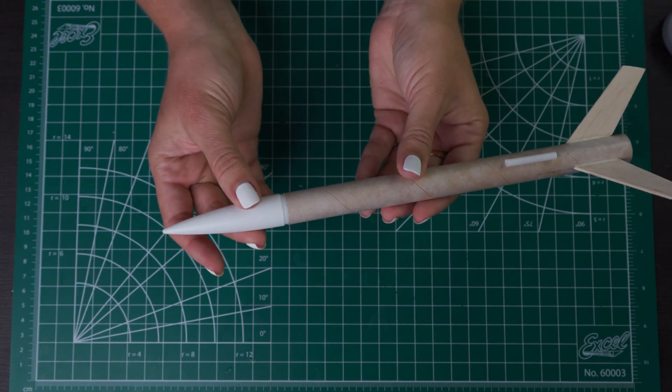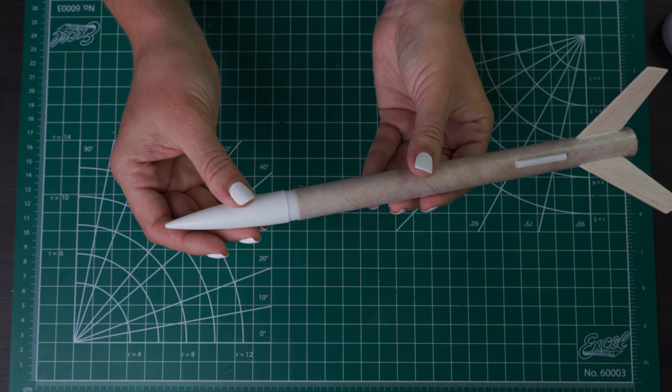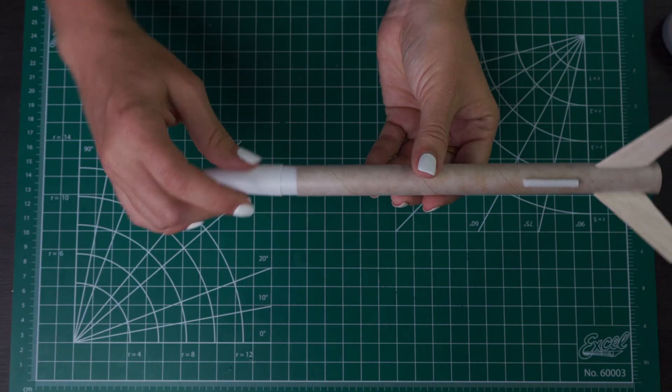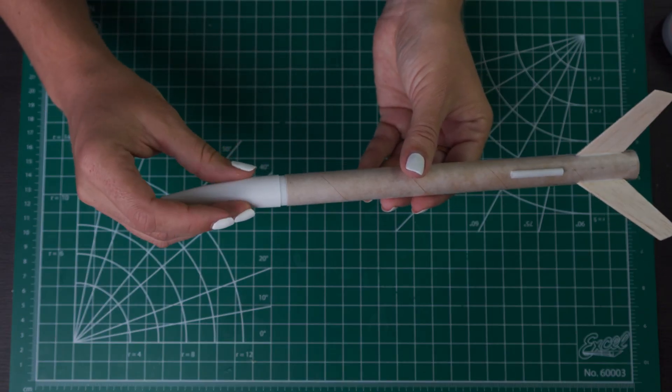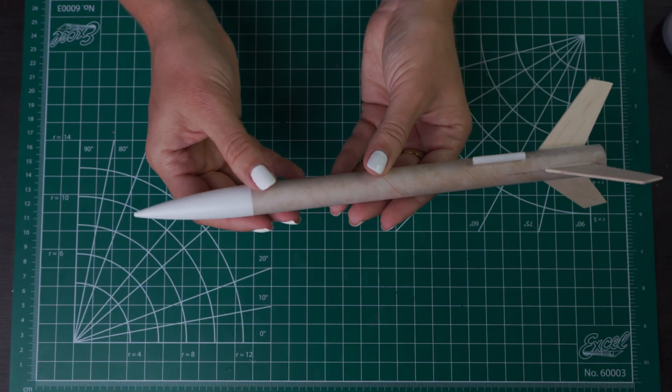You want this nose cone to be a snug fit. If it's too tight then you can sand it down. If it's too loose you can actually add some clear tape around here just to make sure it's not going to fall off. But you do want it to be able to come out with the gases from the engine.